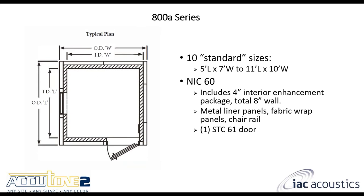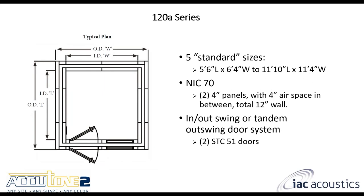The 800A series achieves NIC60 performance by combining a four-inch wall panel with a four-inch interior enhancement package for an eight-inch thick wall construction. It includes a metal liner panel, fabric panel, and chair rail covering the joint. The door upgrades from STC51 to STC61 — a three-and-a-half-inch thick door — and the wall panel construction increases to what IAC calls a Noise Lock 7.